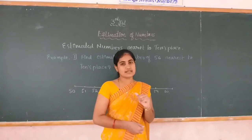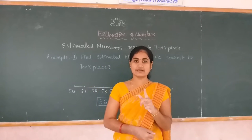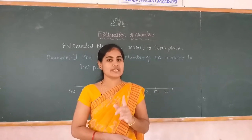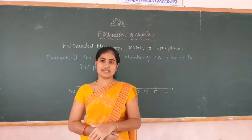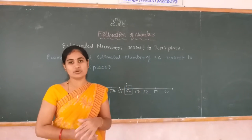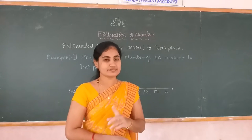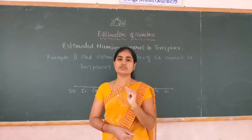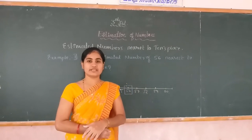First condition: you observe the unit place number. If the number is less than 5, you write the estimated number nearest to the previous tens place. Second condition: if the unit place has a number more than 5, you write the next tens number. Third condition: if the number in the unit place is equal to 5, then you also write the next tens place of that number.